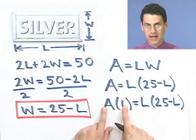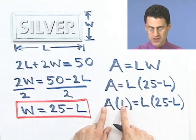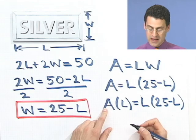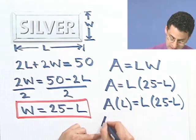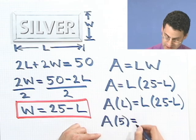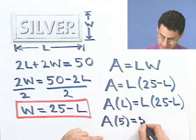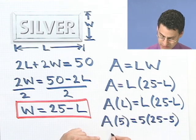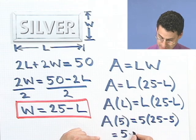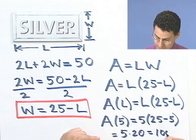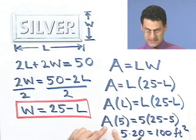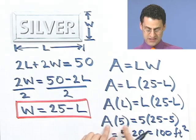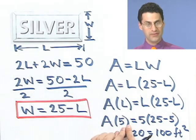There's no multiplication here. This is not A multiplied by L. This is just saying A is a function of L. And here's the function. If you want to find out what the area is, let's say when L equals five feet, then all I have to do is write A of five. And wherever I see an L, I put in five. So I'd see five times 25 minus five. And you can actually compute that. That would be five times 20, which would be 100 feet squared.